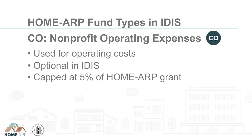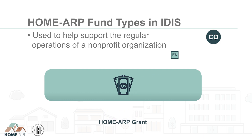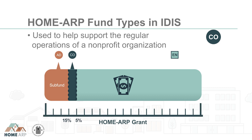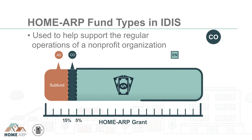CO is for Nonprofit Operating Expenses. This fund type is optional and is not automatically created by the system. When using optional fund types, the PJ must first set aside the funds by manually setting up a subfund. For optional subfund types, the PJ must create a subgrant to authorize funding for a specific organization. CO is capped at 5% of the HomeARP grant. These funds can be used to help support the regular ongoing operations of a nonprofit so they can better provide HomeARP services and activities.